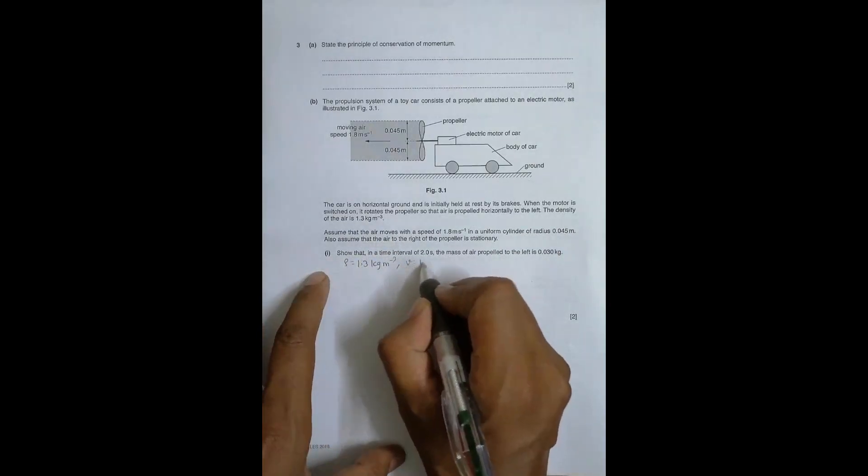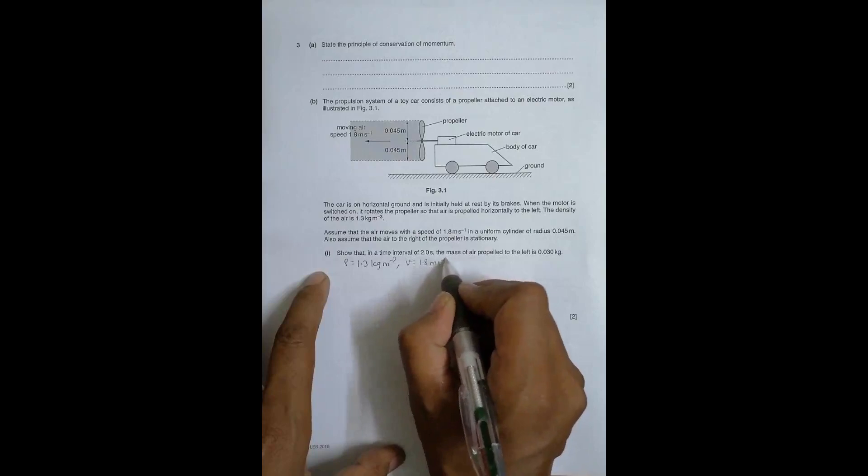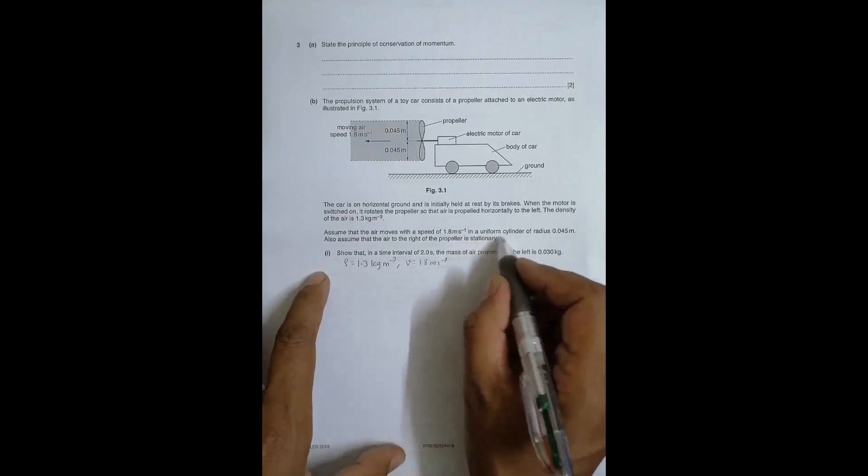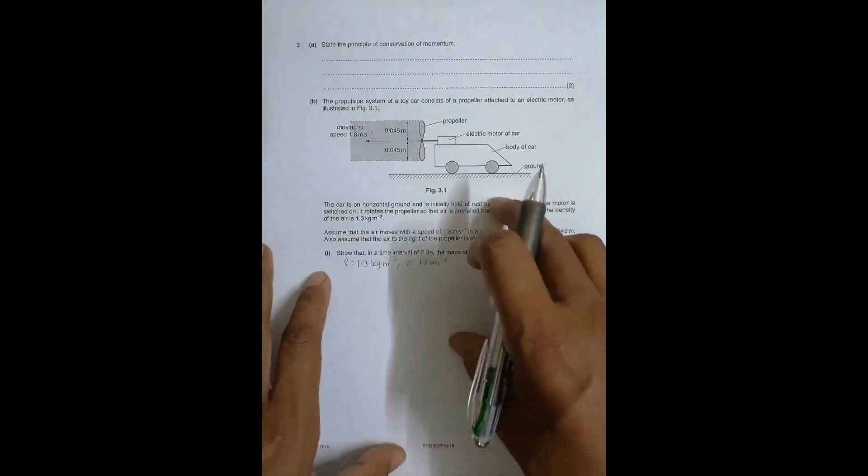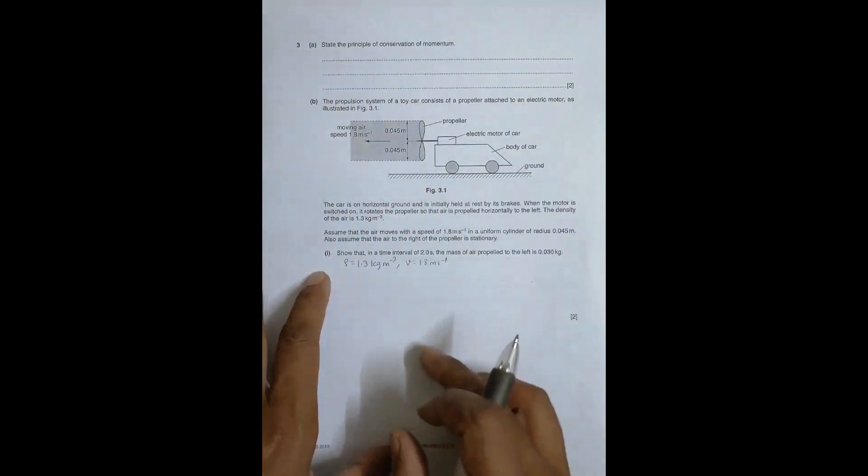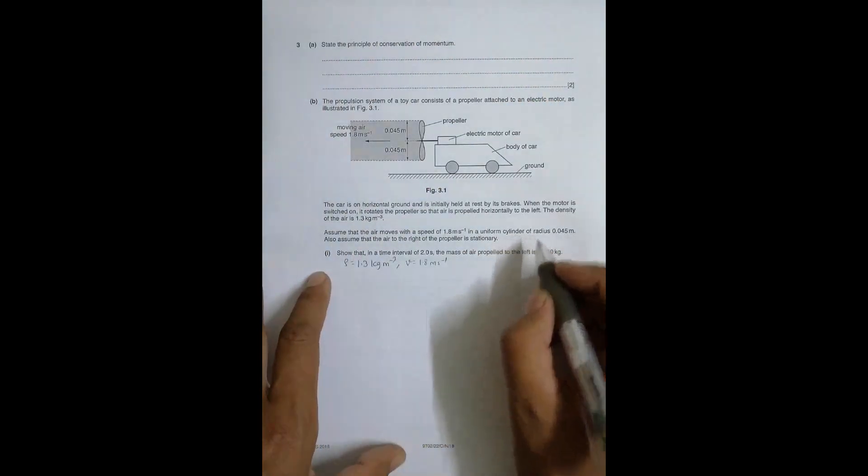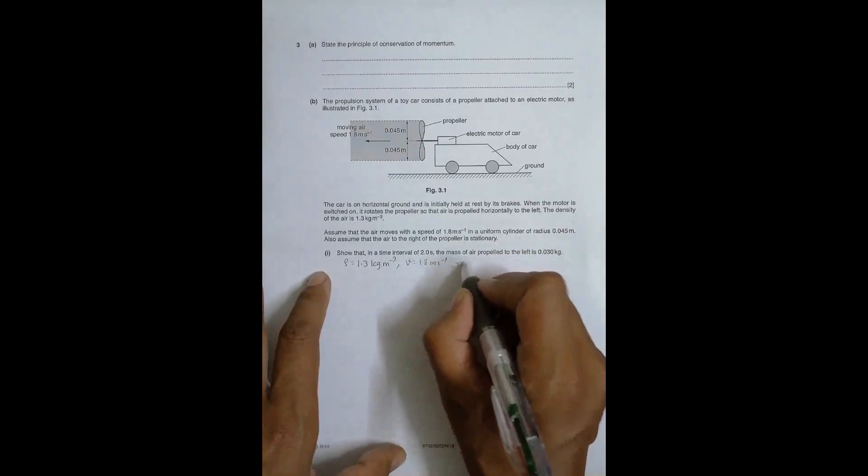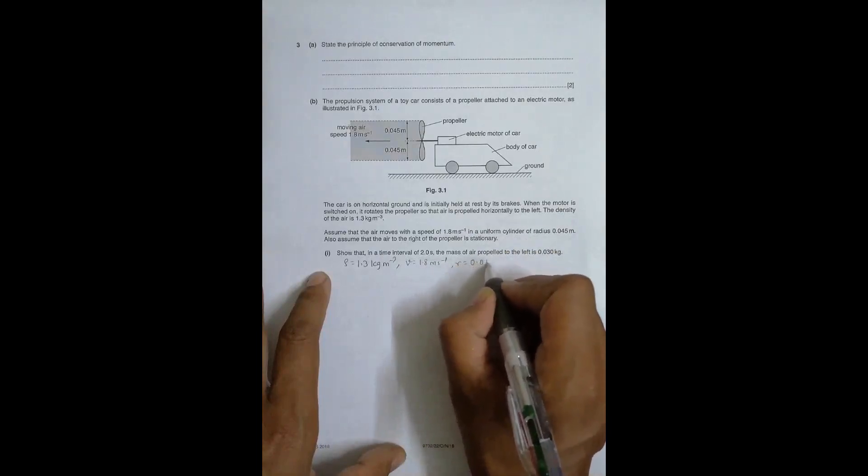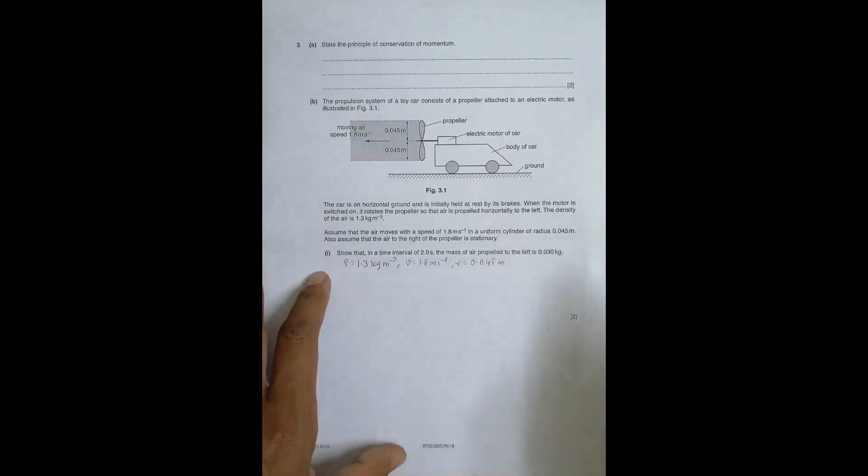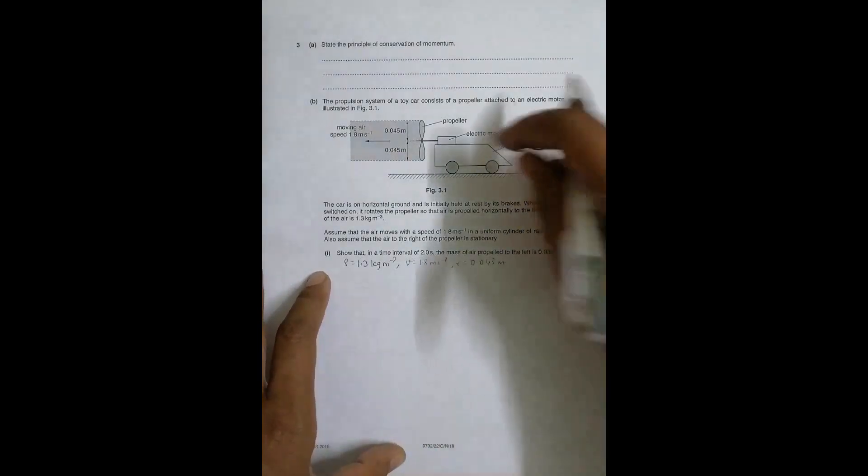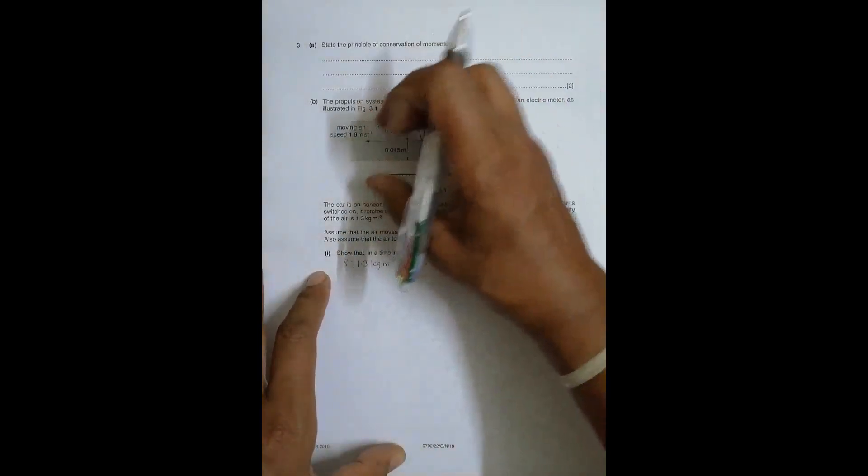Assume that the air moves with velocity v equal to 1.8 meter per second in a uniform cylinder of radius r equal to 0.045 meters.